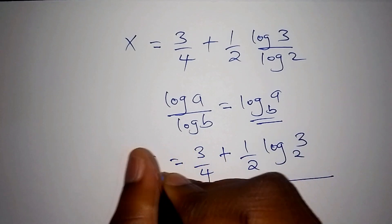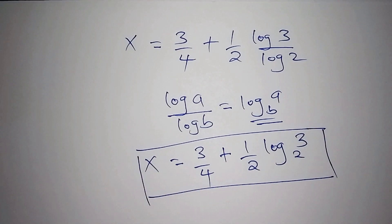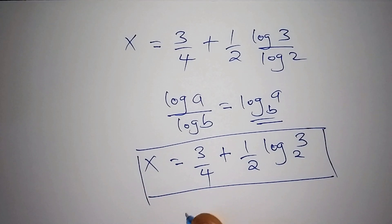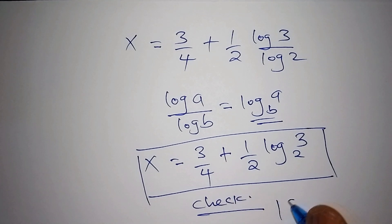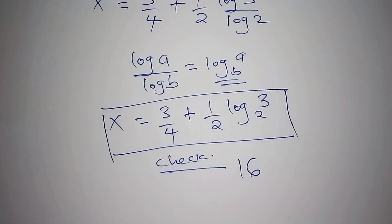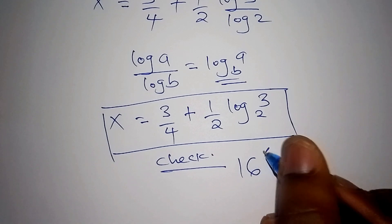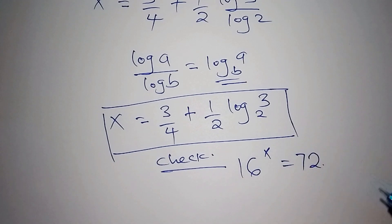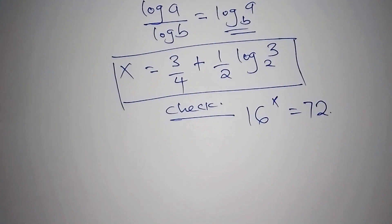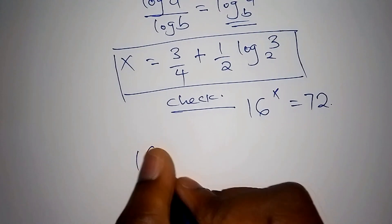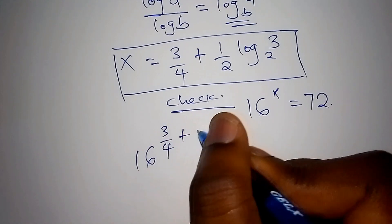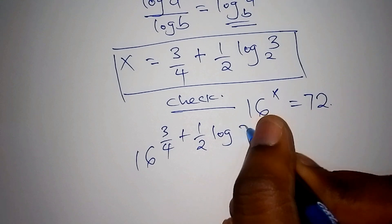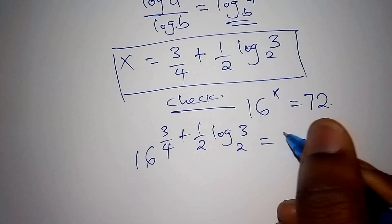That is our value for x. We can still check and confirm if our answer is correct. We substitute back: 16 to the power of 3 over 4 plus one half times log base 2 of 3 is equals to 72.